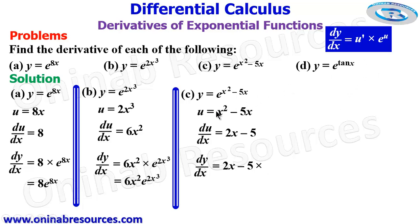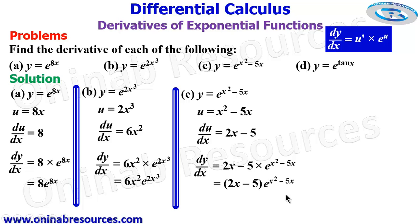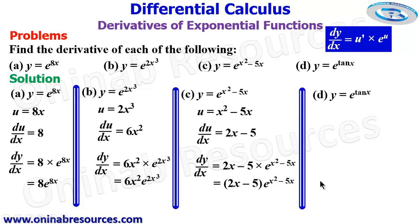So we now have dy/dx equal to u prime, which is 2x minus 5, times e raised to power u. Our u is x squared minus 5x, so we have e raised to power x squared minus 5x. Simplifying, this gives us (2x minus 5) times e raised to power (x squared minus 5x). That's the end of the solution to problem c.